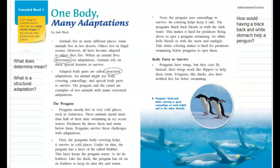We will begin 'One Body, Many Adaptations' by Judy Black. Animals live in many different places. Some animals live in hot deserts; others live in frigid oceans. However, all have become adapted to where they live. Where an animal lives determines its adaptation.